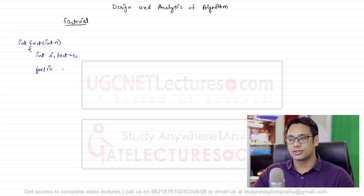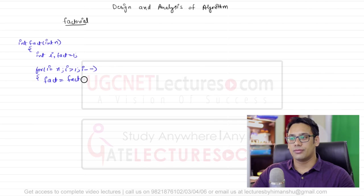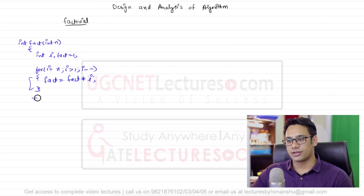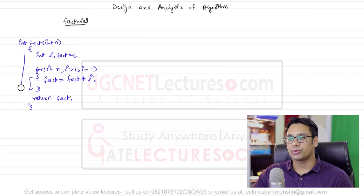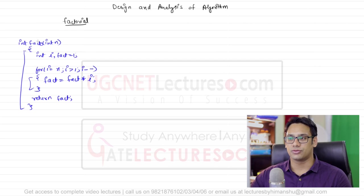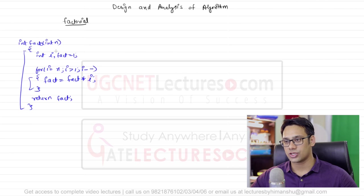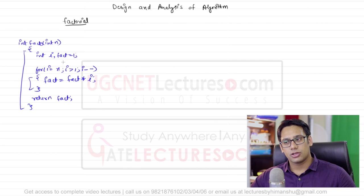Then a for loop: for i = n, while i > 1, i--, do fact = fact * i, and then return fact. The function name is facto because it was colliding with the variable name fact. This is a very simple non-recursive program to find the factorial of a number.